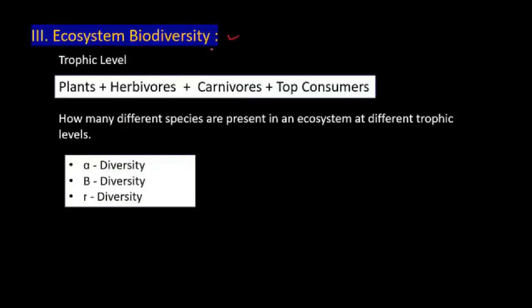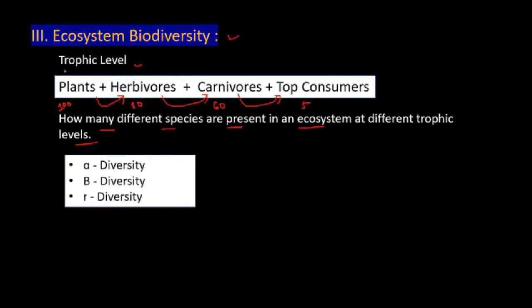The third type is ecosystem diversity. Ecosystem diversity refers to trophic levels, such as plants at trophic level one, herbivores at trophic level two, carnivores at trophic level three, and top consumers. Ecosystem diversity considers how many different species are present at each of these different trophic levels within the ecosystem.